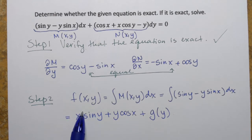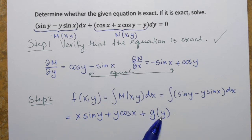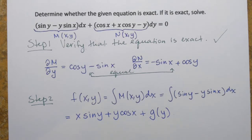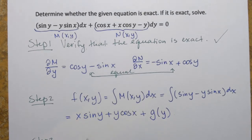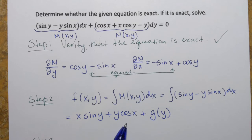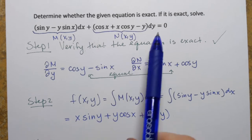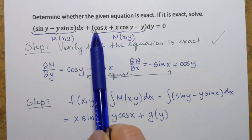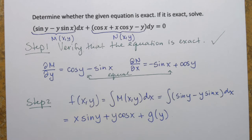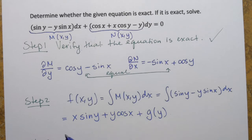So we obtained function f of xy. We know everything about it except the last piece, g of y. In step three, we take function f and obtain its partial derivative with respect to y. The partial derivative of f with respect to y equals N of xy, and through that step we will be able to determine function g of y.